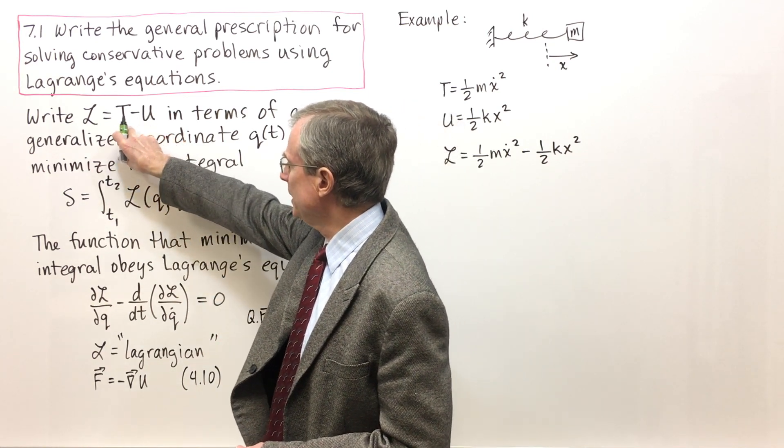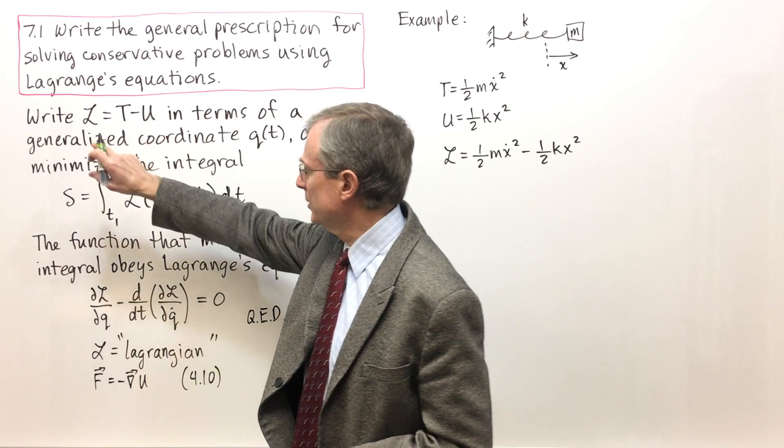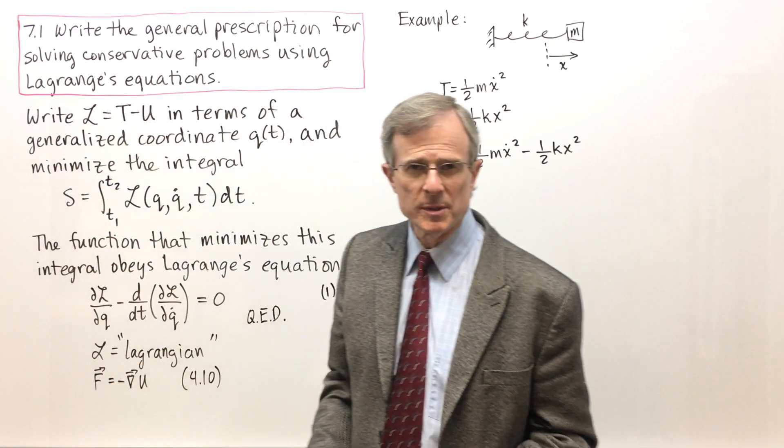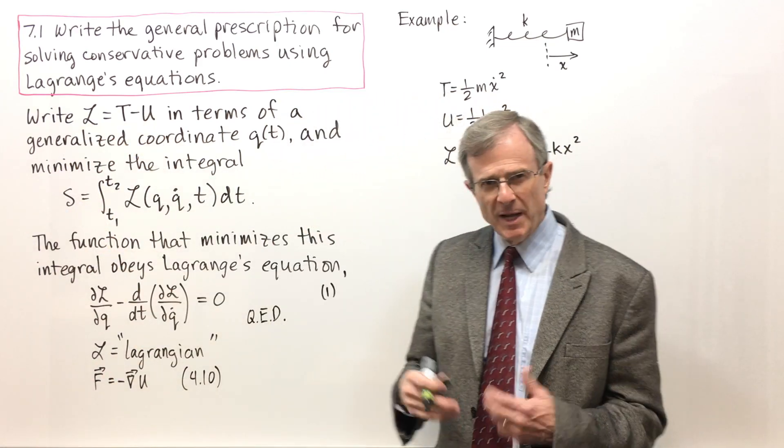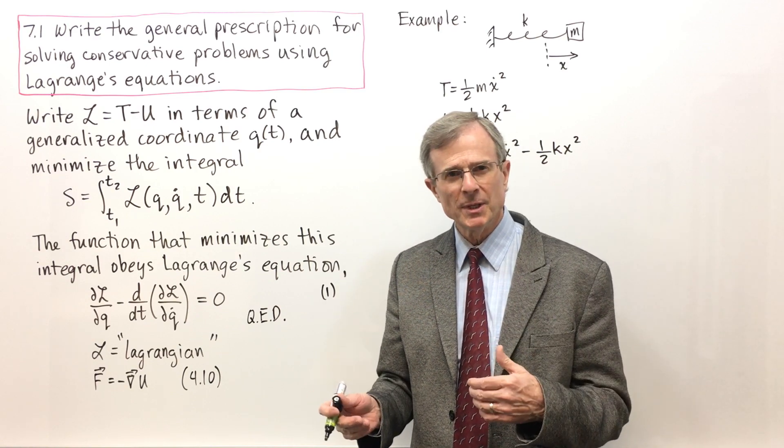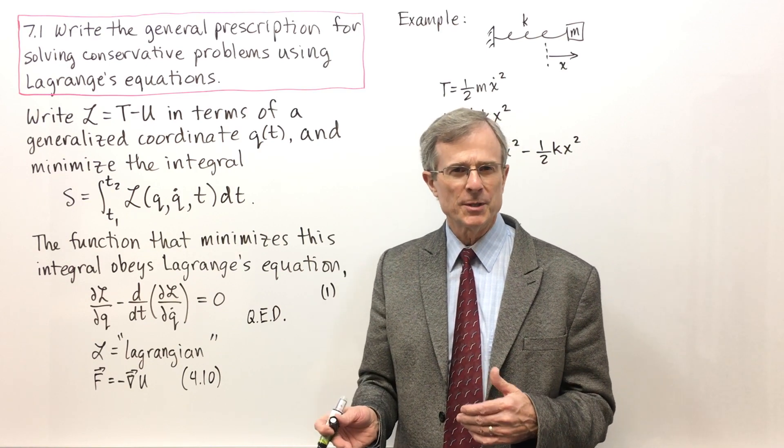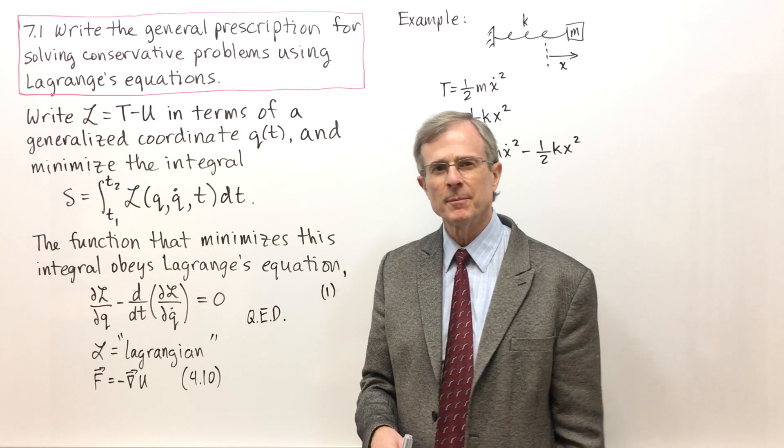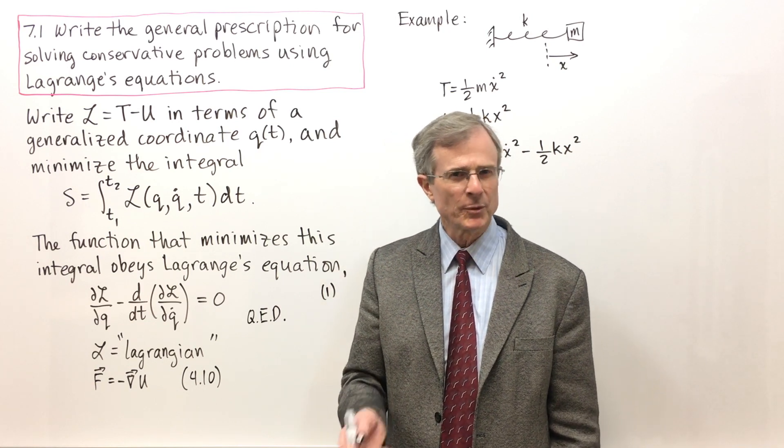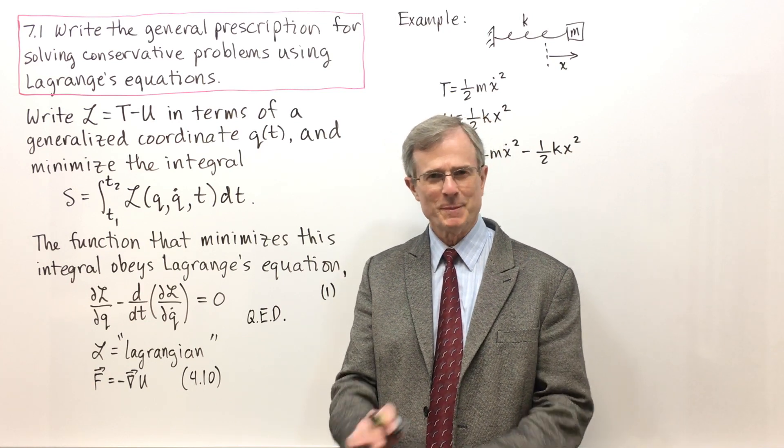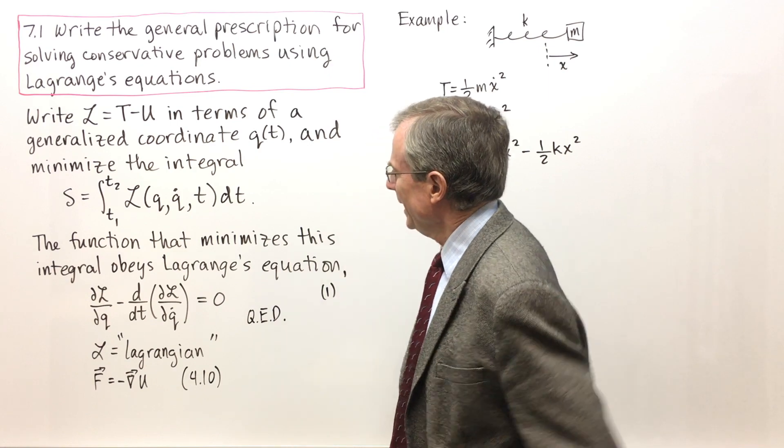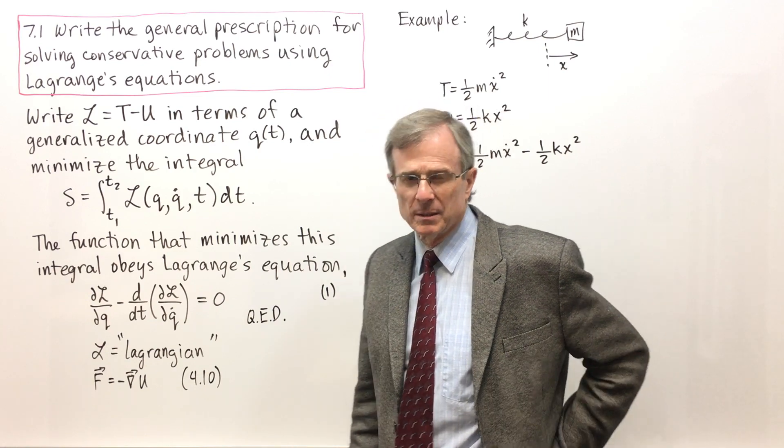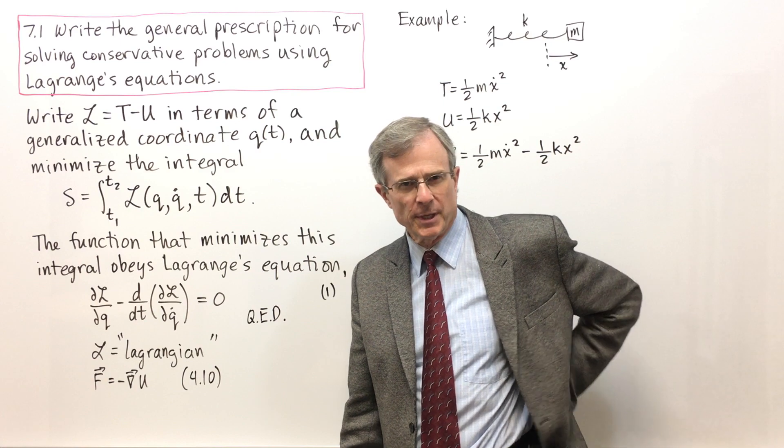The difference between these two, the kinetic and the potential energy, forms what is known as the Lagrangian. The magic is that this Lagrangian, the integral over the Lagrangian as a function of time, turns out to be a minimum for conservative problems. It's one of the most magical results, and it starts to look a lot like the Calculus of Variations problem.